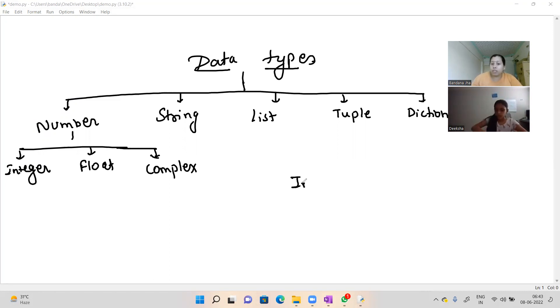Integer means what? Whole number. It can be suppose 52, it can be minus 52, 30, minus 32, right?